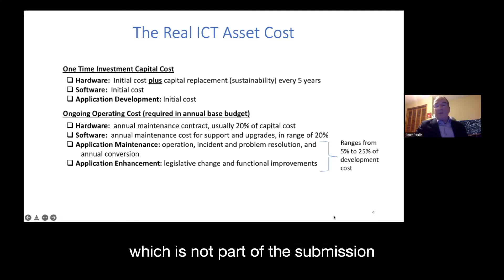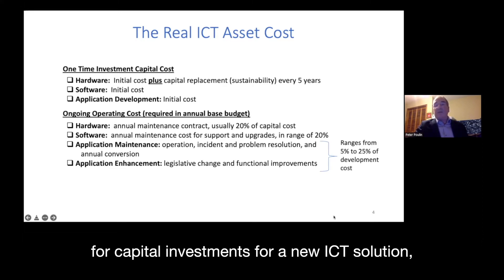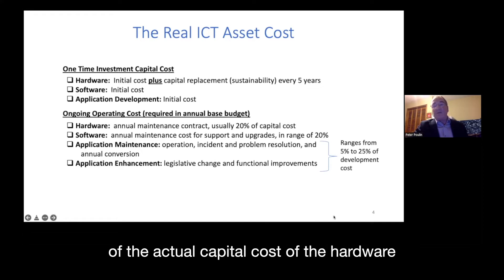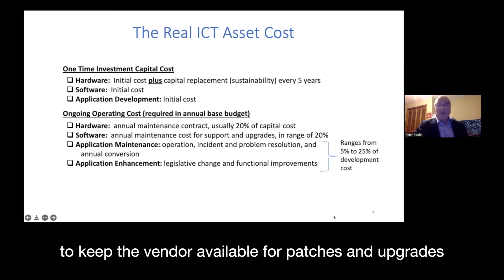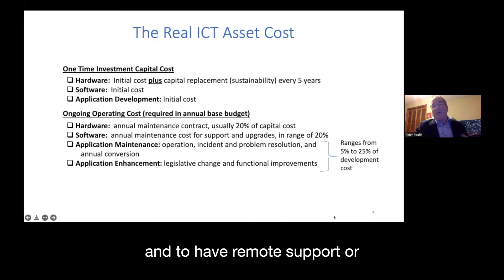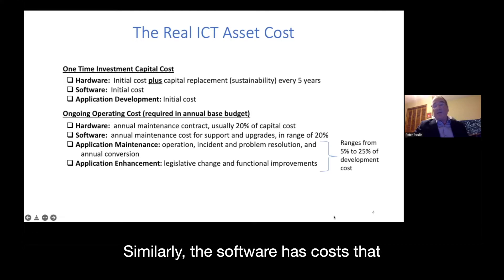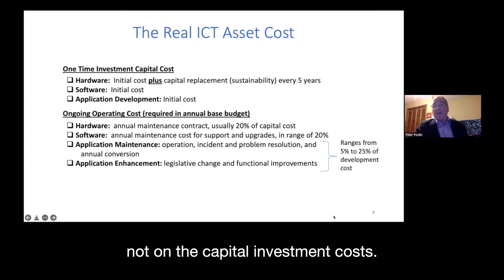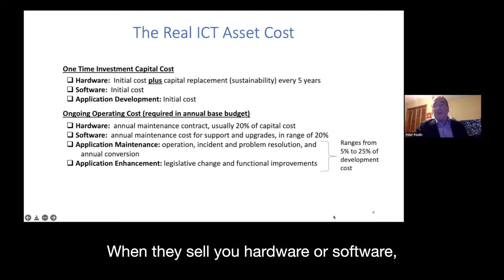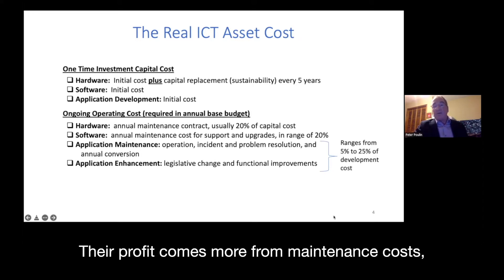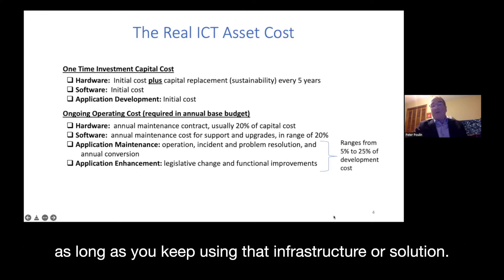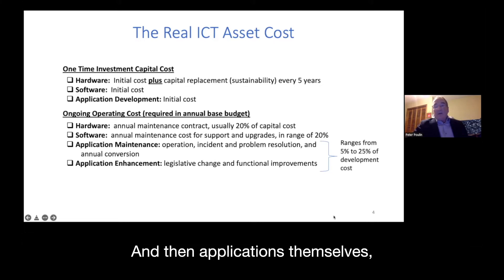On the ongoing operating cost side — which is not part of the capital investment submission — you have the annual maintenance cost for hardware, which is usually about 20% of the actual capital cost of the hardware. This keeps the vendor available for patches, upgrades, and support in times of crisis. Similarly, software has ongoing maintenance costs that run to roughly 20% of the purchase price. Vendors actually make their money on maintenance costs, not on the initial capital investment — it's almost a loss leader; their profit comes from the ongoing recurring annual costs you pay as long as you keep using that infrastructure or solution.